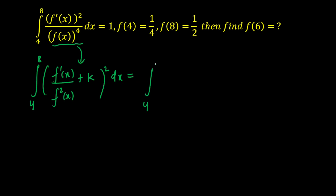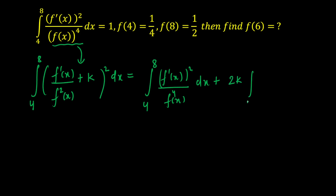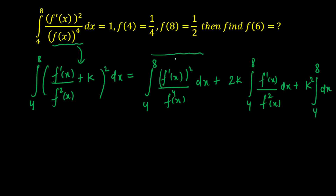Opening the square, we get: integral from 4 to 8 of [f'(x)]²/[f(x)]⁴ dx, plus 2k times the integral from 4 to 8 of f'(x)/[f(x)]² dx, plus k² times the integral from 4 to 8 of dx. The first integral is already given as 1. The last integral gives 4k² (the difference of limits, 8−4=4).